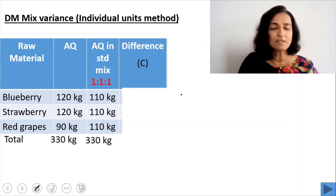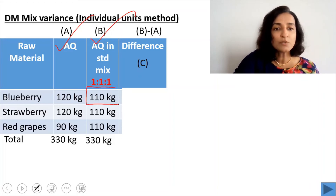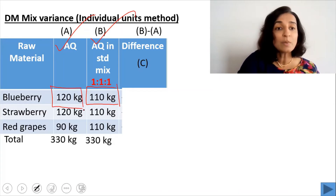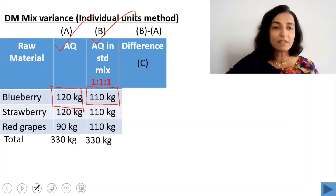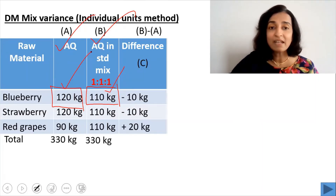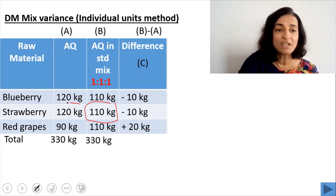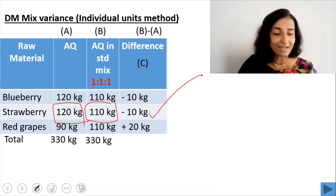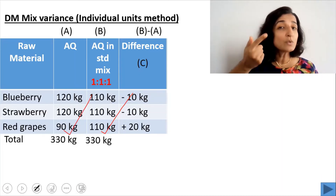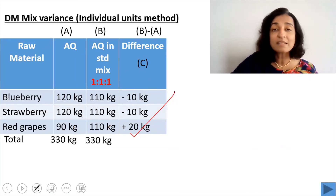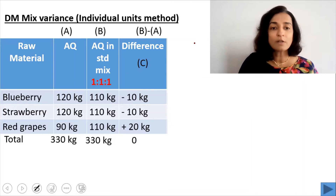Now we find the difference — column C equals column B (standard mix quantity) minus column A (actual quantity). For blueberry: 110 minus 120 equals minus 10 kg — we used 10 kg extra. For strawberry: 110 minus 120 equals minus 10 kg — again 10 kg extra used. For red grapes: 110 minus 90 equals plus 20 kg — we used 20 kg less than the standard mix. Note that the total of column C will always equal zero.